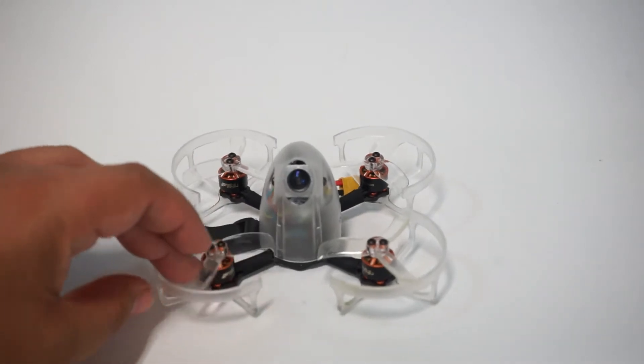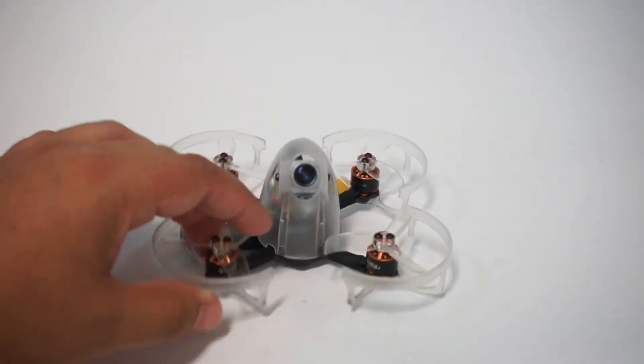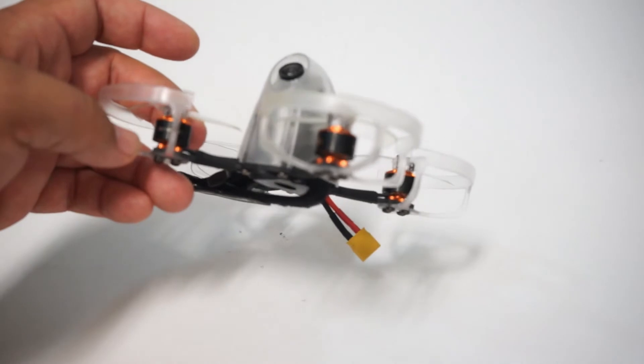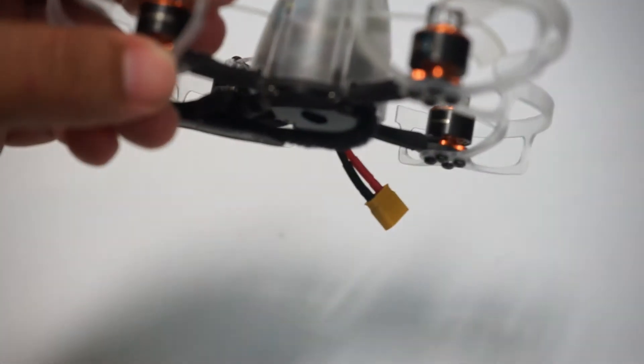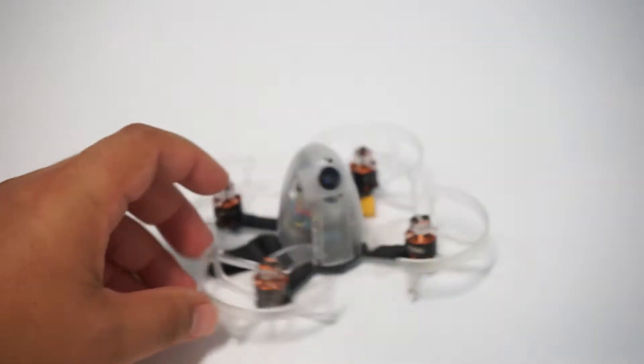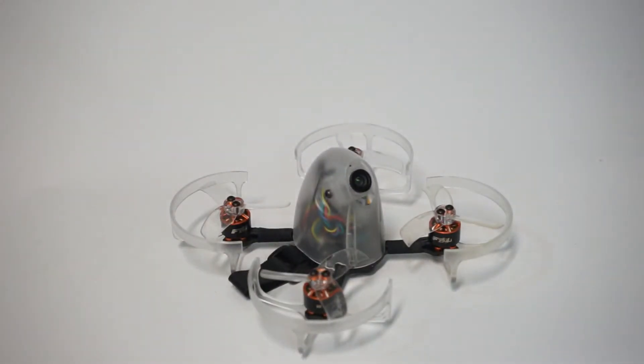Now these are using T-Motors new F-15 motors. They are 6,000 kV which means that you're really meant to run this on 2S or 3S.